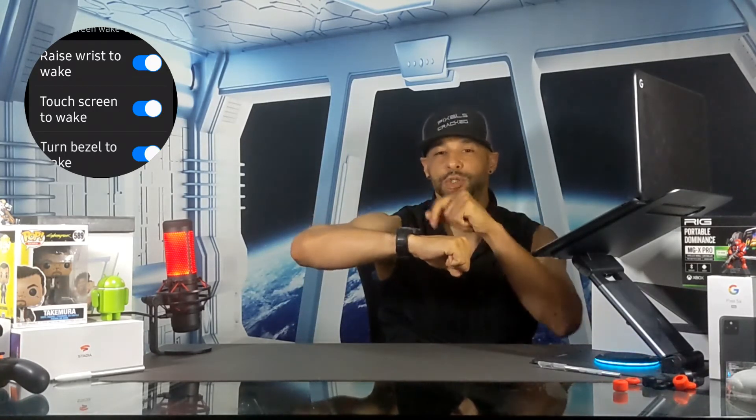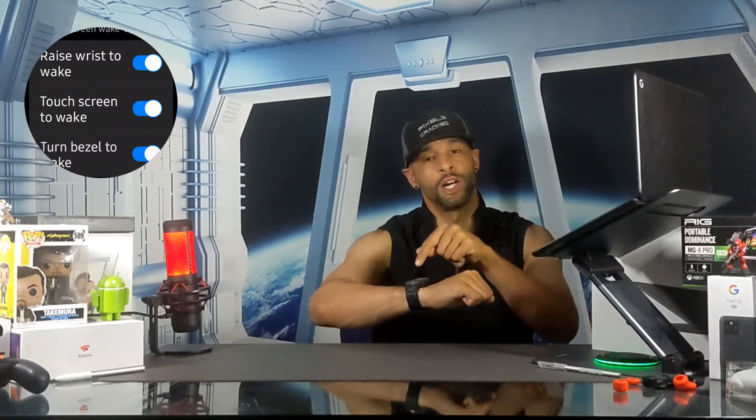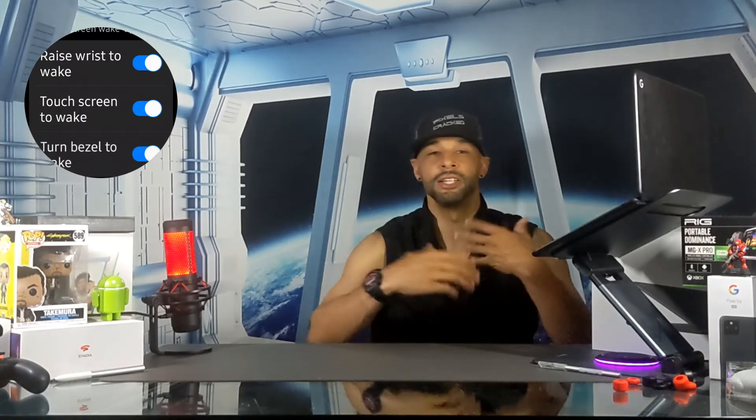Moving on, if we swipe up just a little more, we're going to have our Screen Wake options. These are intuitive options for literally waking your display, and they include Raise Wrist, Touch Screen, and Turn Bezel to Wake. I want to highlight this section because it's especially useful if you're looking to trigger your Google Assistant on the Watch 4 Classic by voice. These options will bring your watch into full awake mode, which is what's needed for your watch to recognize your voice to trigger the assistant. If you're interested in learning how to use the Google Assistant on the Watch 4 Classic, you can click on the card in the corner of this video to learn more.